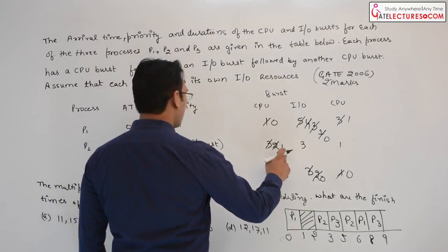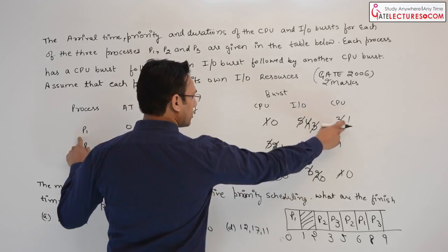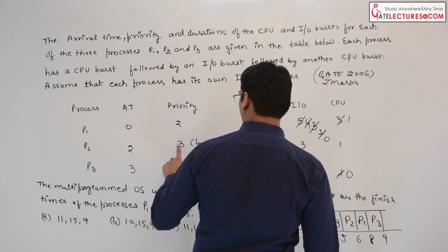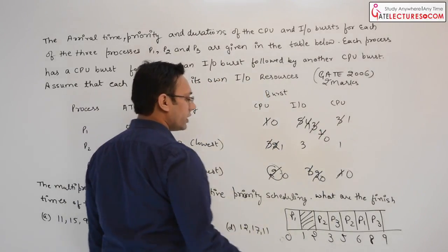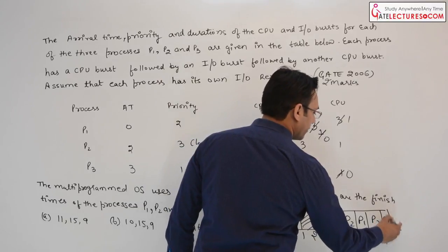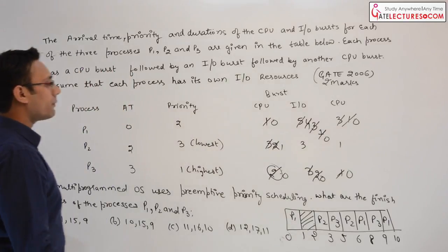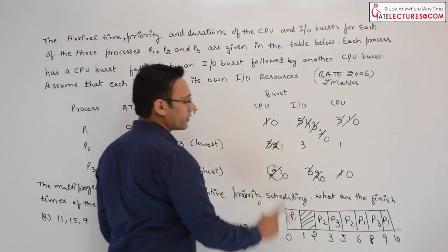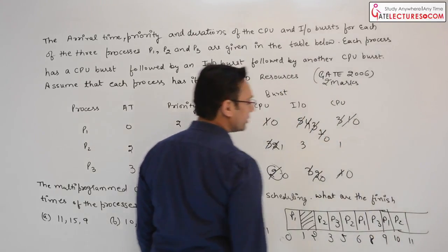Now we have process P2 and process P1 both requiring the CPU. The priority of P1 is higher than that of P2. Therefore, we will execute process P1 for 1 unit of time, and process P1 will finish at time 10. After this, the only process that has not completed is process P2, so P2 will be executed for 1 unit of time.